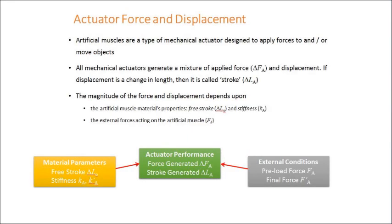Artificial muscles are a type of mechanical actuator designed to apply forces to objects or to move those objects. Like all mechanical actuators, artificial muscles generate a mixture of force and displacement. Sometimes the displacement is called the stroke. The magnitude of the force and the displacement generated by the artificial muscle depends on two things: the material properties and the external forces.